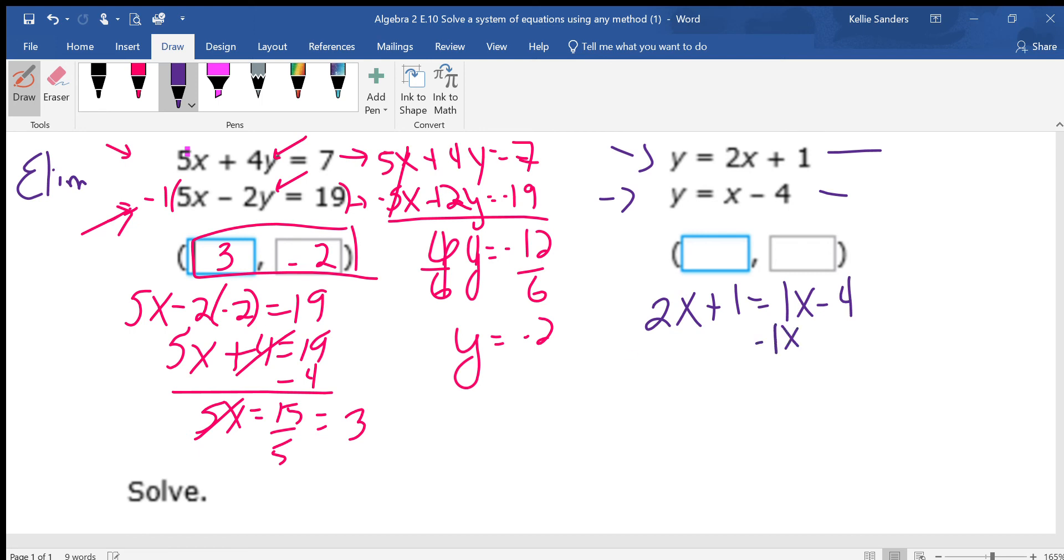Subtract the 1x. That goes away. 2 minus 1 is 1. So 1x. So 1x or just x is negative 5. x is negative 5.